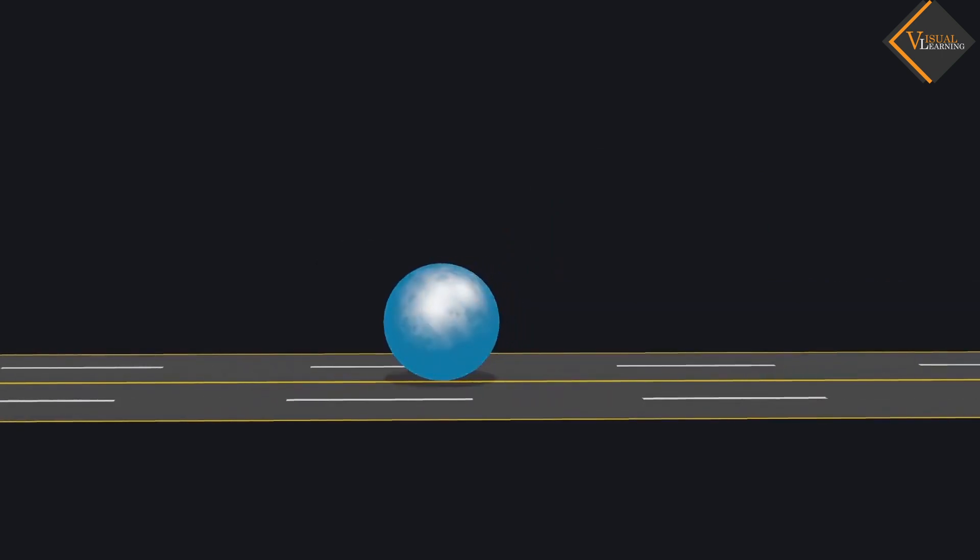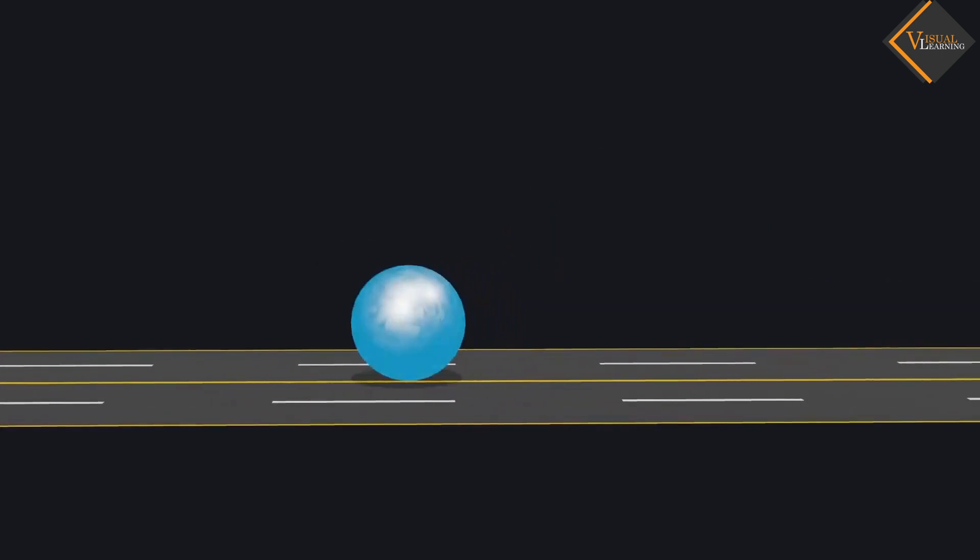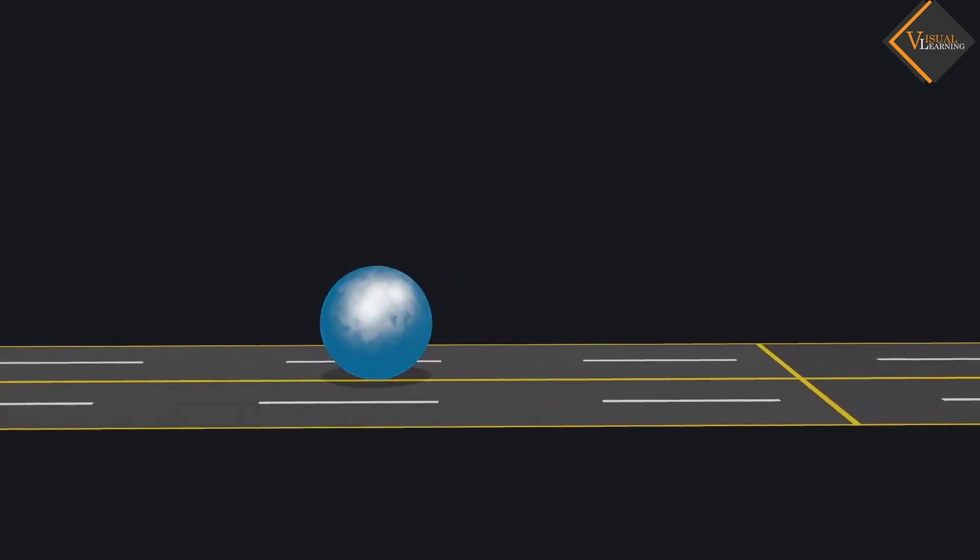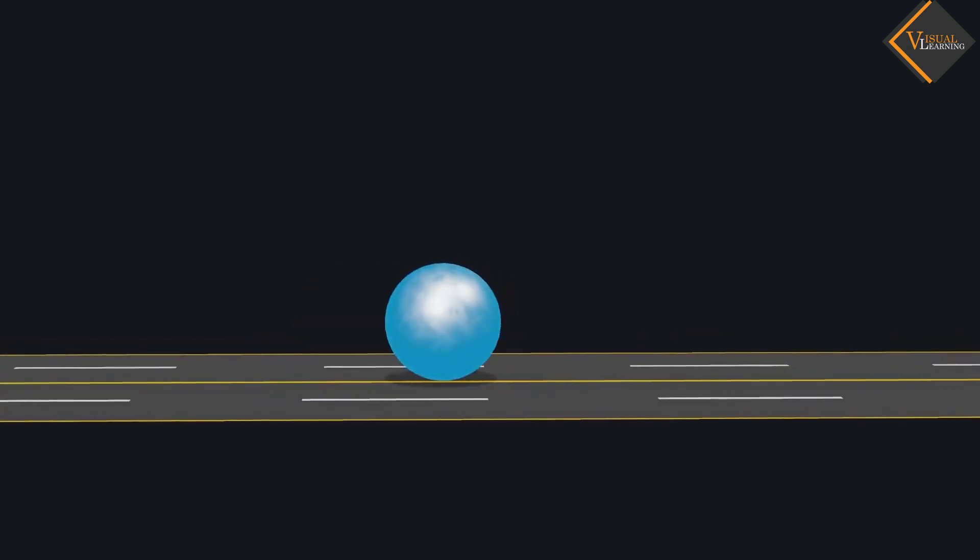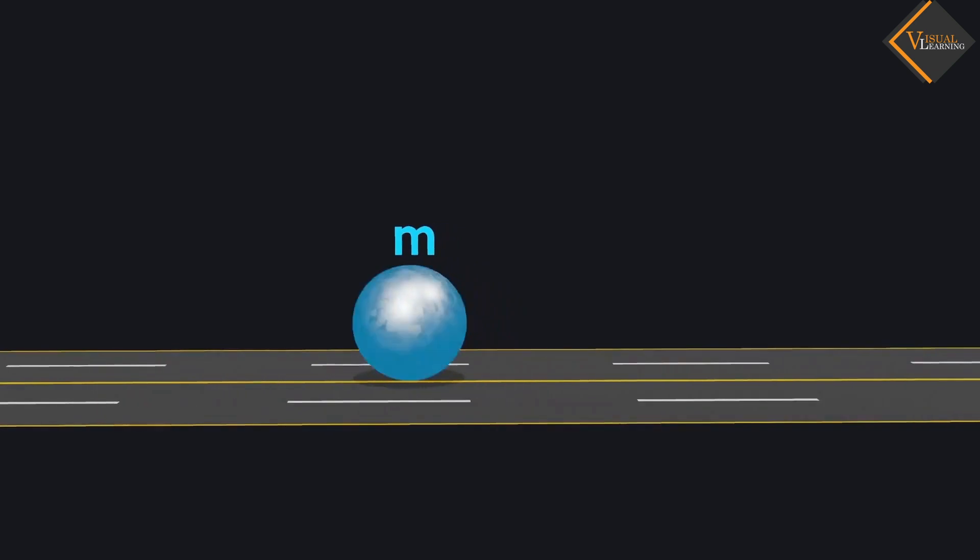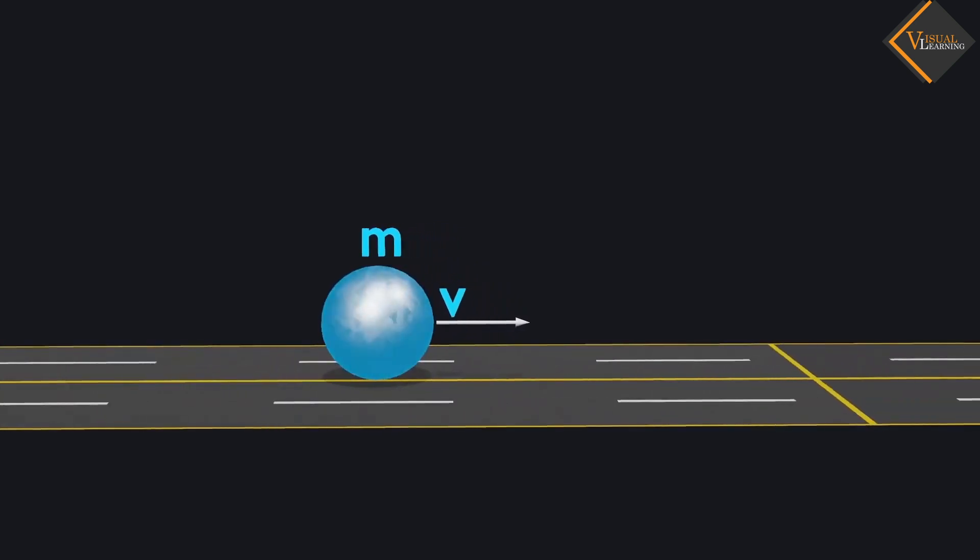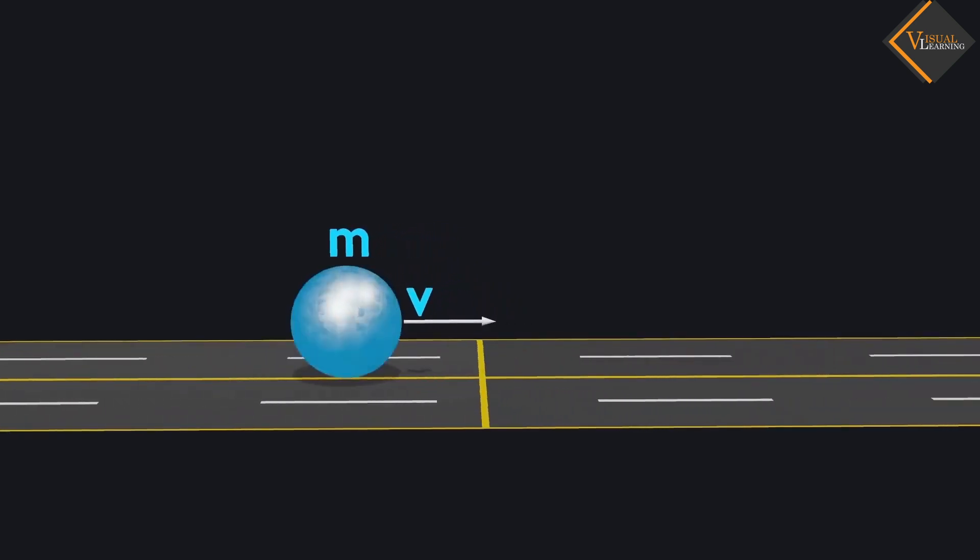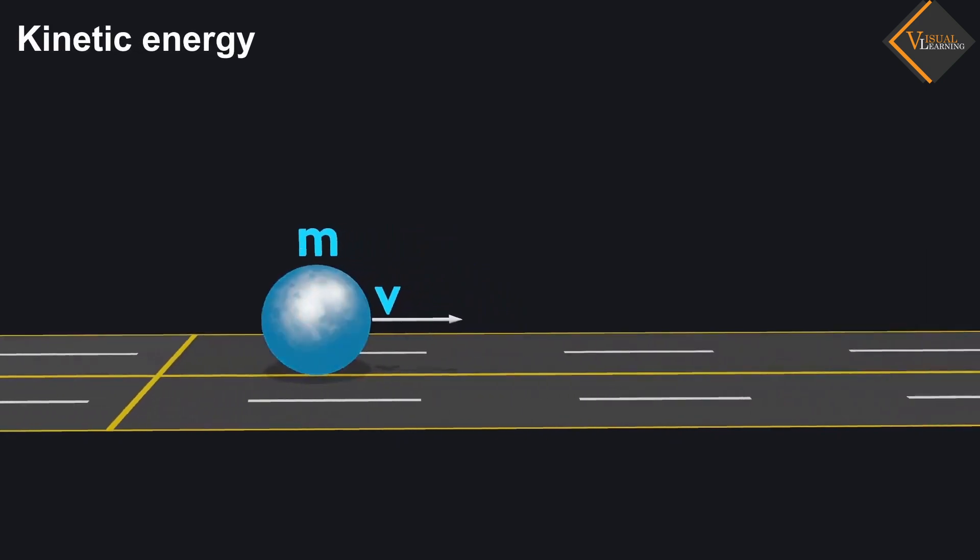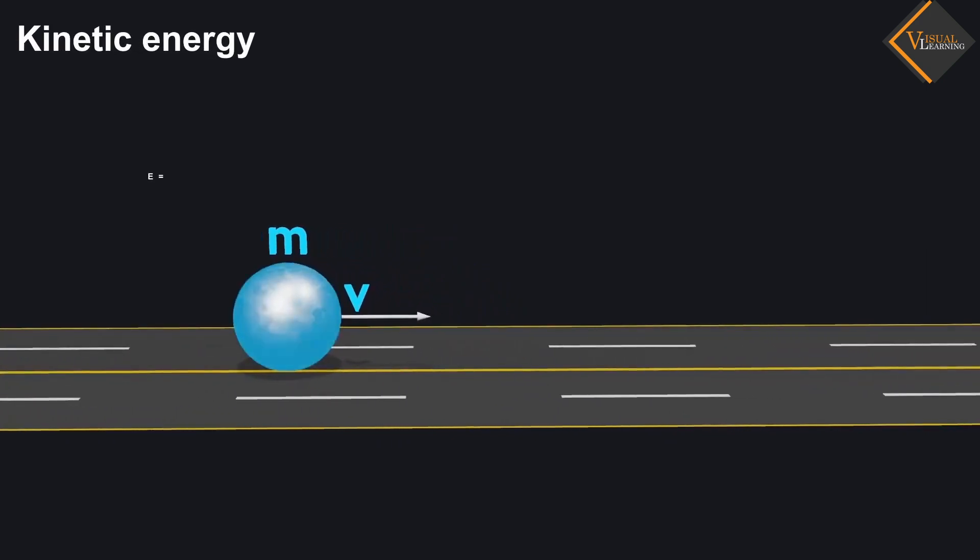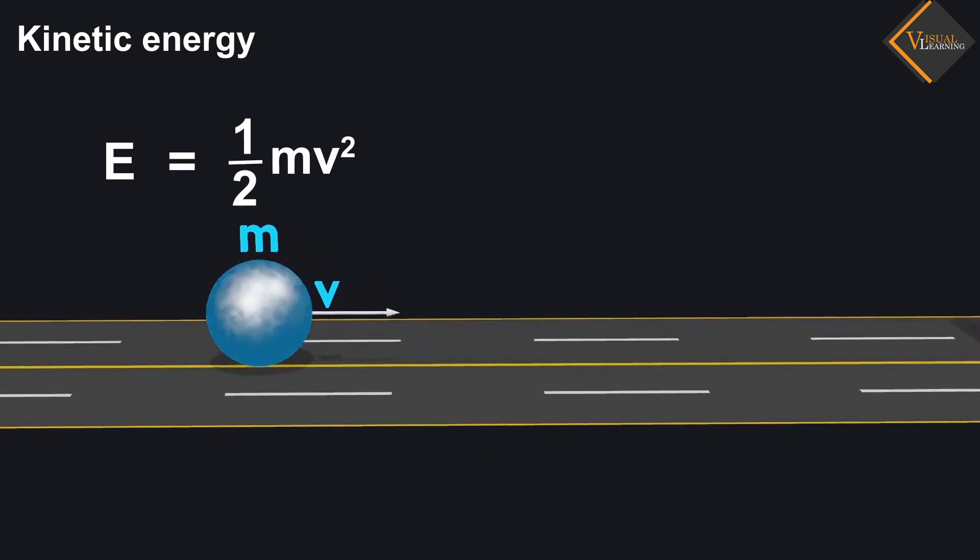Now, let us express the kinetic energy of an object in the form of an equation. Consider an object of mass m moving with a uniform velocity v. Kinetic energy can be expressed as E equals one-half mv squared.